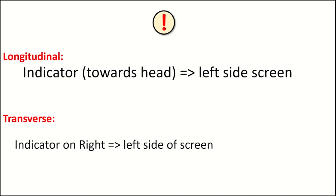To rehash: in the longitudinal or sagittal section, the indicator should be towards the head, meaning the head will be on the left side of the screen and feet on the right. In the transverse or axial section, the indicator on the probe is on the right, indicating that the patient's right side is on the left side of the screen — just like any CT scan.